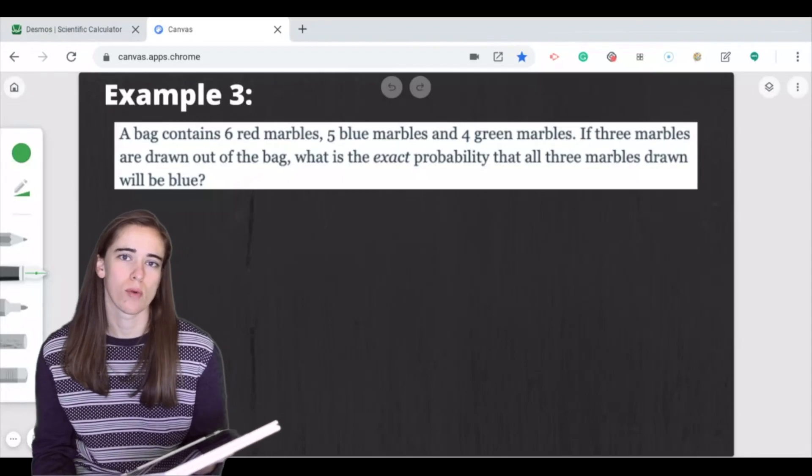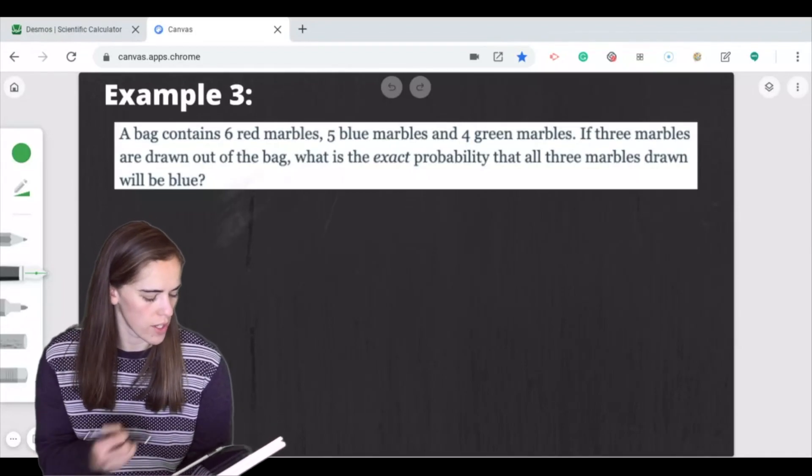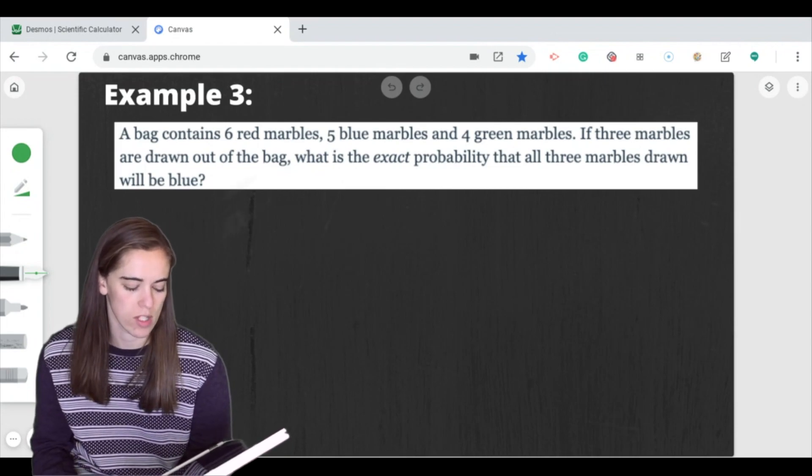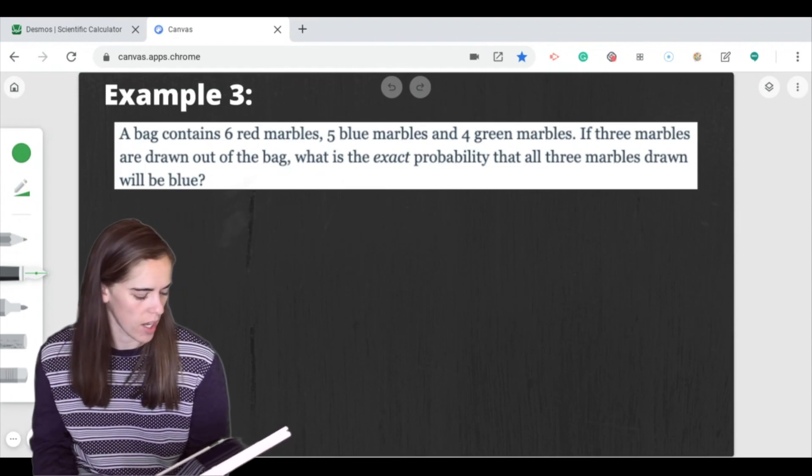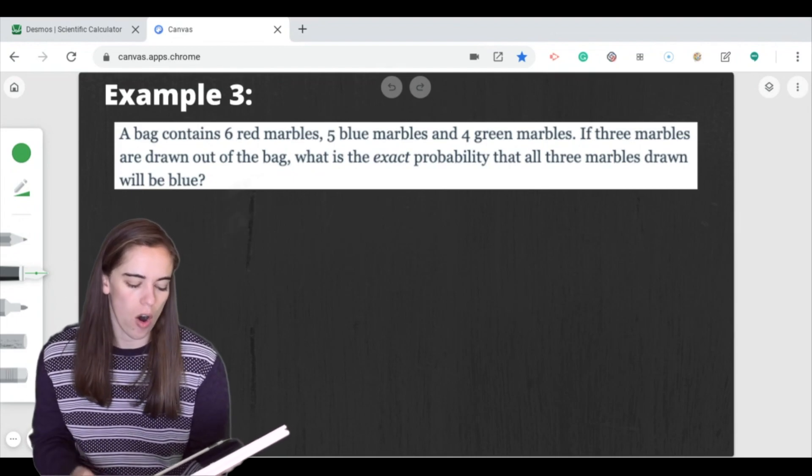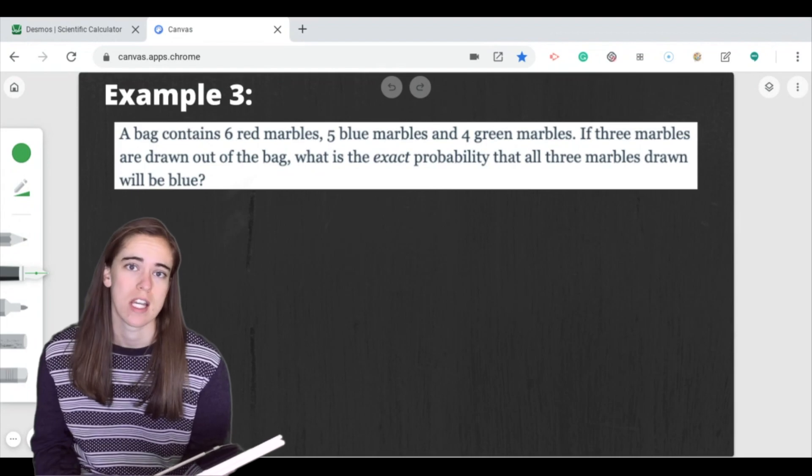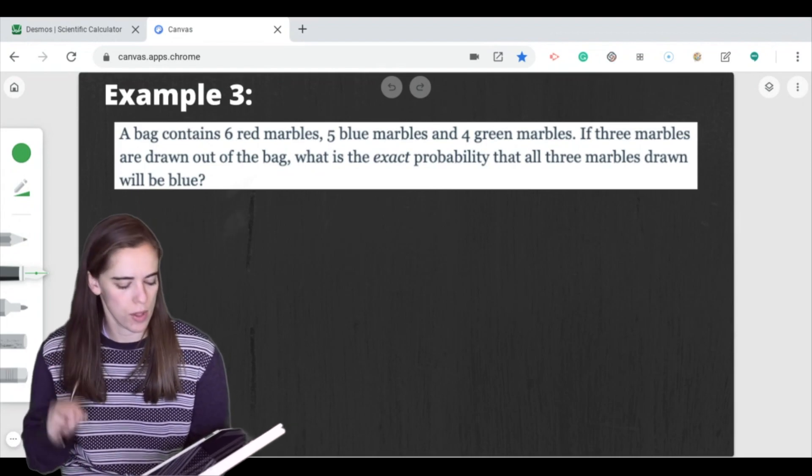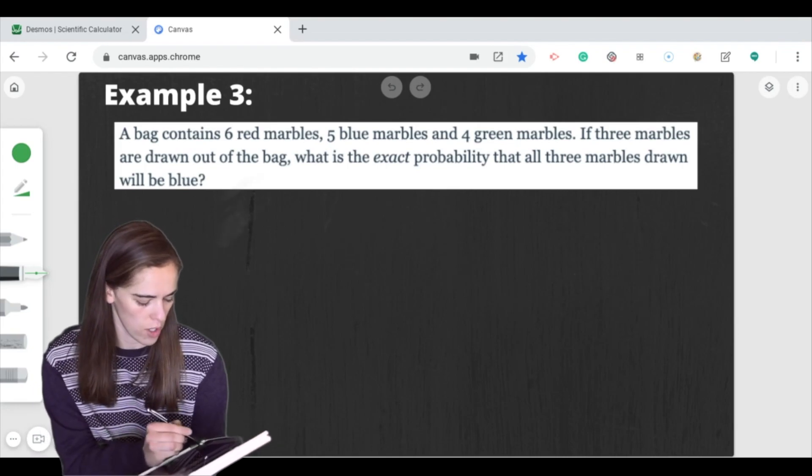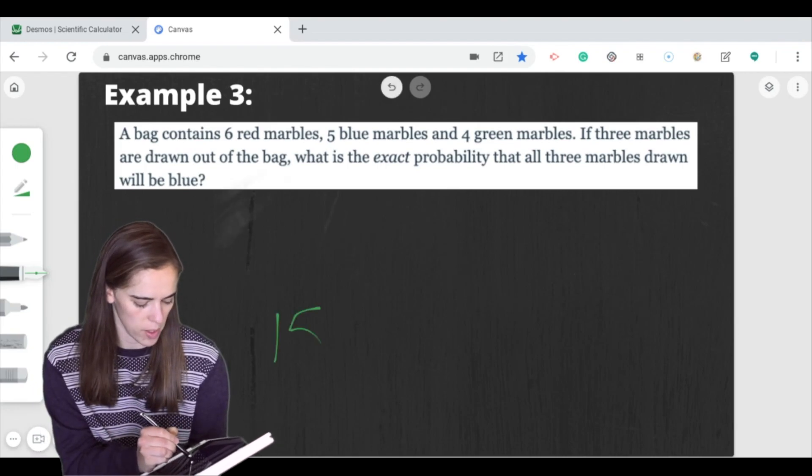All right, on to example three. This one's a little bit different. So this one says a bag contains six red marbles, five blue marbles, and four green marbles. If three marbles this time are drawn out of the bag, what's the exact probability that all three marbles drawn will be blue? Okay, so we're going to use the same concept here, but now we have to do it three times. So to start, we're going to figure out how many total possibilities. Well, that's six plus five plus four. So that's 15 total possibilities.